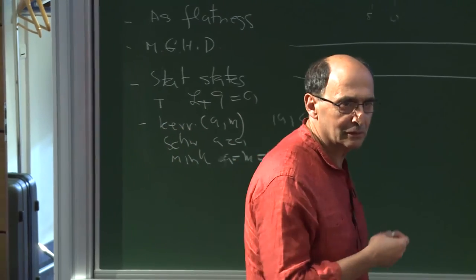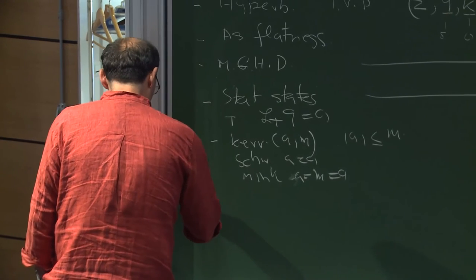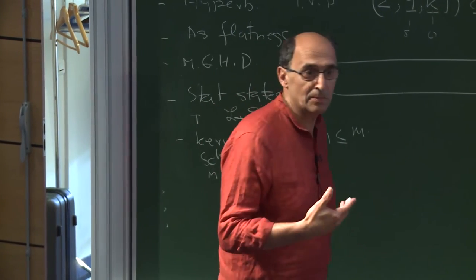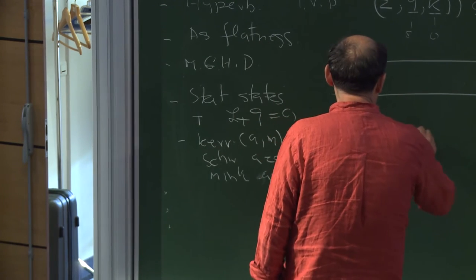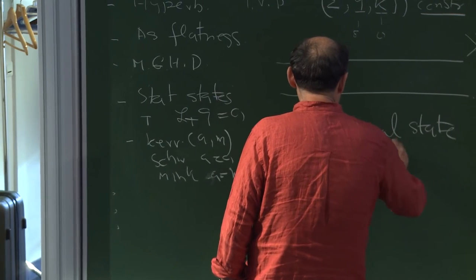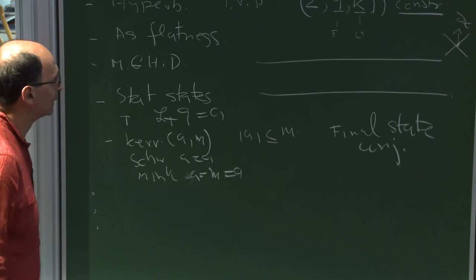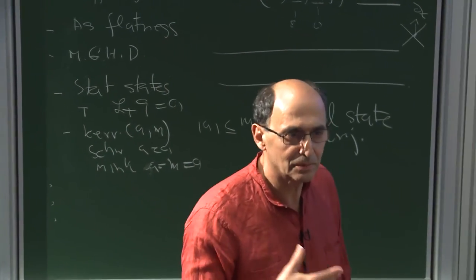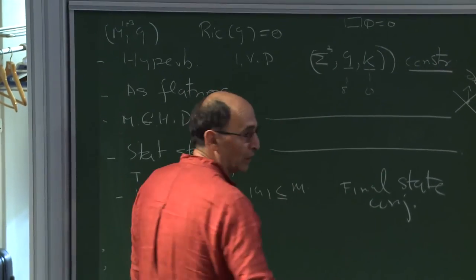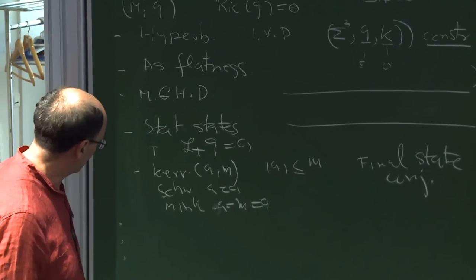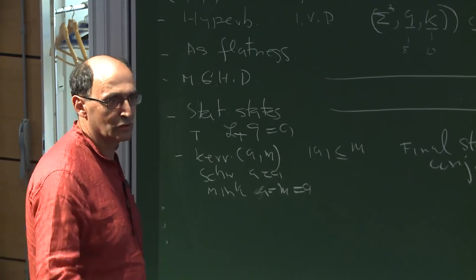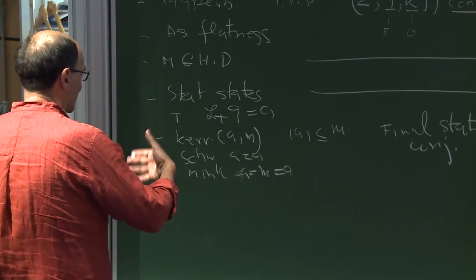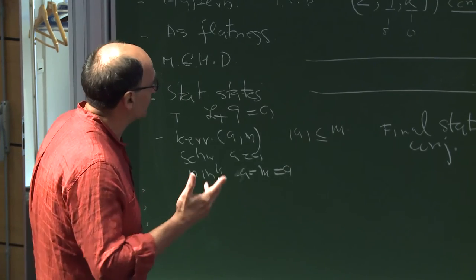Once you think you know all the stationary states, you can conjecture the so-called final state conjecture: if you take any initial data, then asymptotically — even though the interactions and nonlinear analysis will be incredibly complicated — eventually in any finite region of spacetime you are only going to see a Kerr solution. This is like the soliton resolution conjecture. I interpret this final state conjecture in the sense that things are essentially stable, because otherwise it doesn't make physical sense.